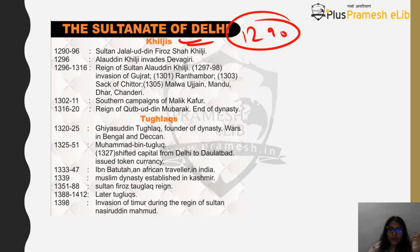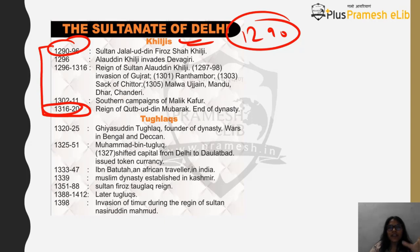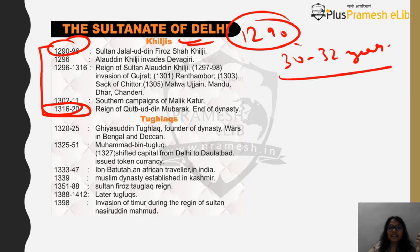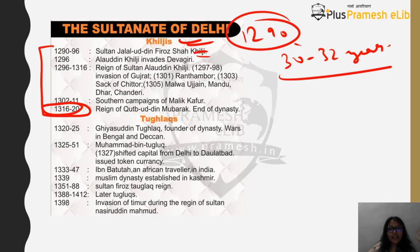Coming to the Khilji part: Khilji rule starts from 1290 and goes to 1320, so around 30-32 years of rule. The establishment is done by Jalaluddin Khilji in 1290, just after the end of the Slave Dynasty.